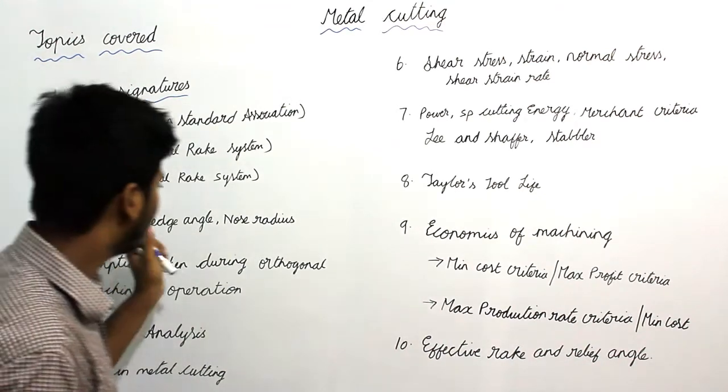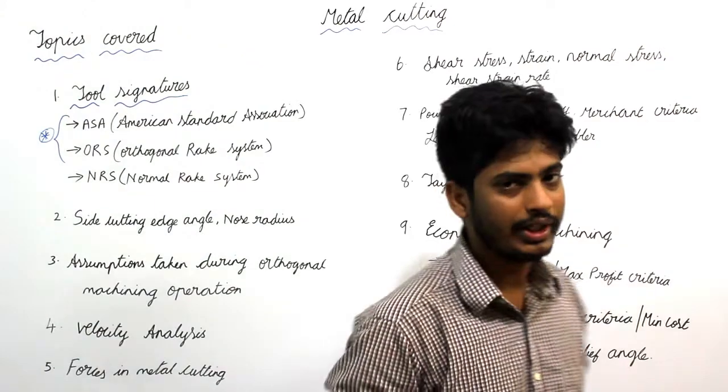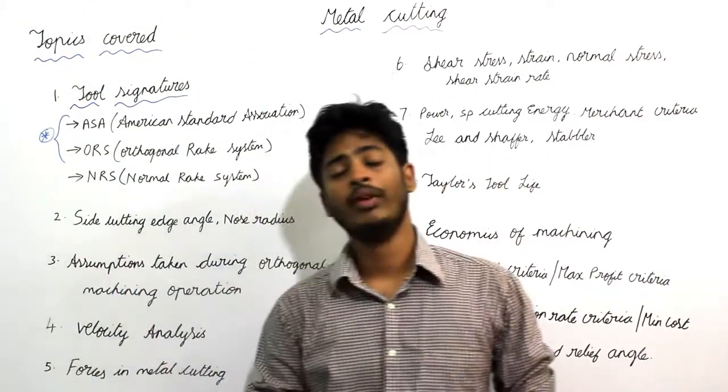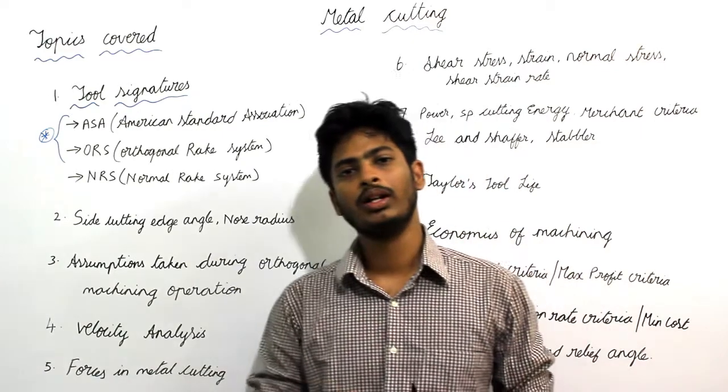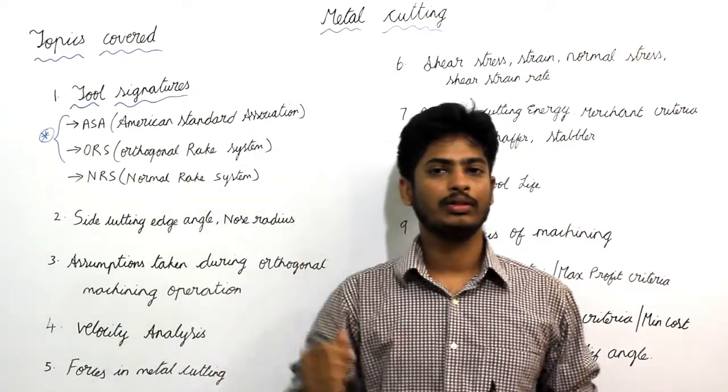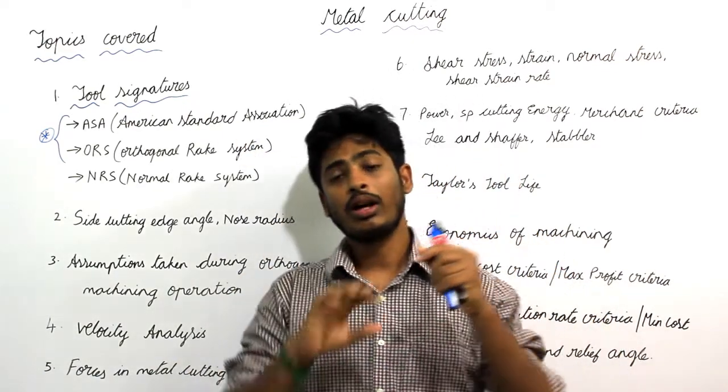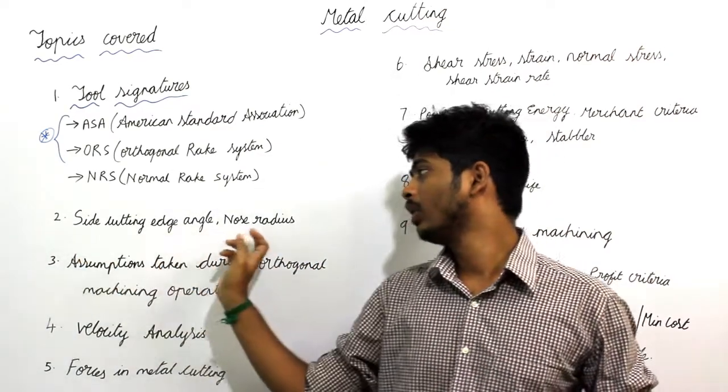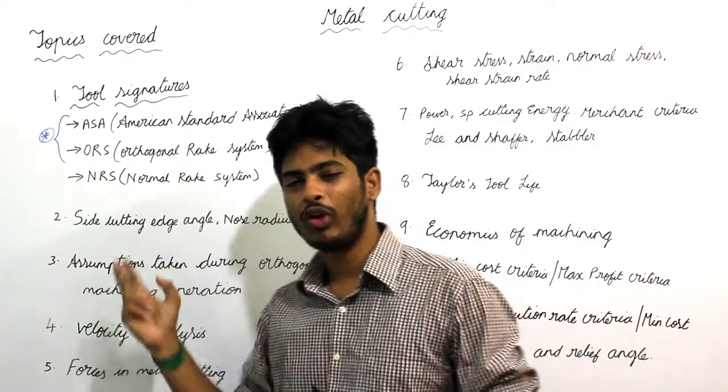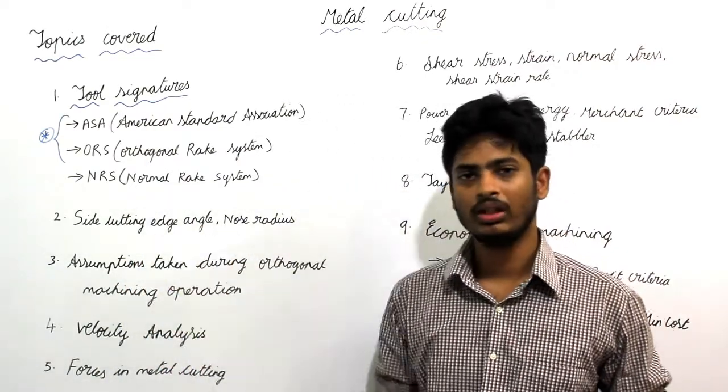Second is side cutting and nose radius. Under this topic we will study about Rp and nose radius. Rp refers to maximum peak to valley height. It comes under surface finish also. So side cutting and nose radius, there are two formulas for these two topics. It is easy.